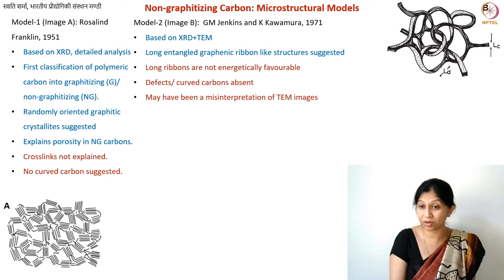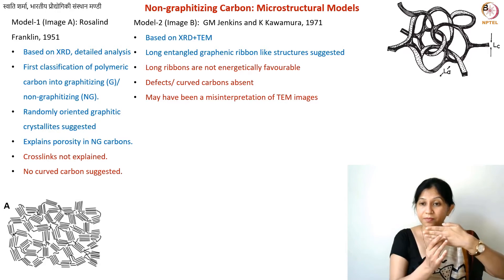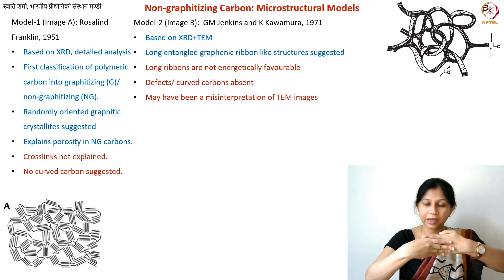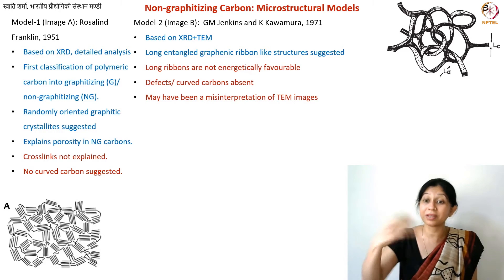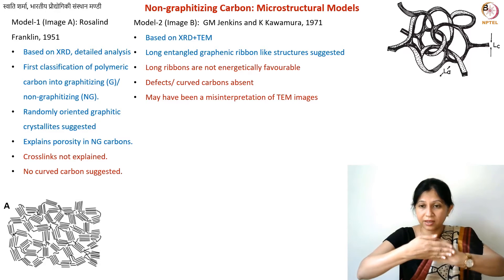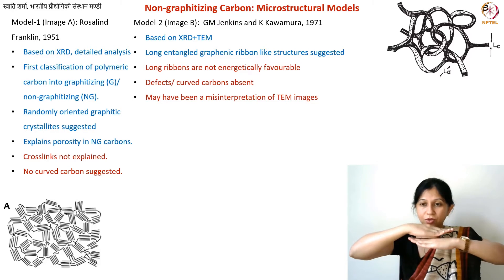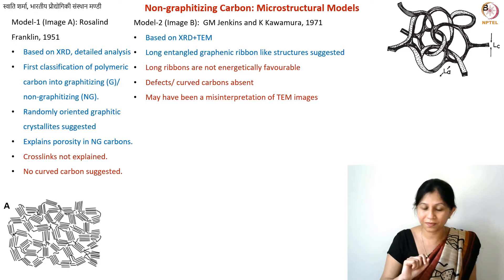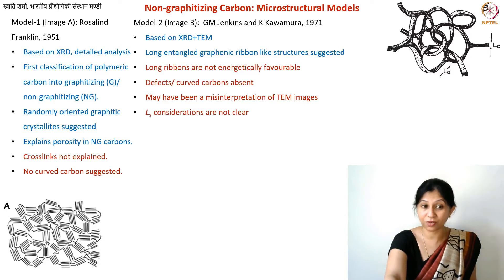If the structure looks a certain way in TEM, you may say this model looks correct. But consider this: if you have one carbon flake and another flake oriented differently, in the 2D projection you will still see two lines that look like two ribbons stacked on each other — but they might actually be two discs. So there may have been some misinterpretation of TEM images. Also, whether La should be taken along the length or width of the ribbon remains unclear.